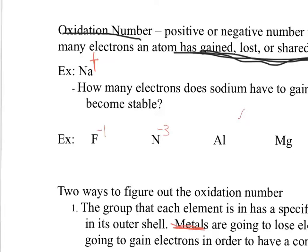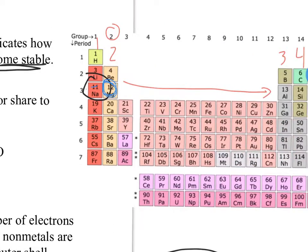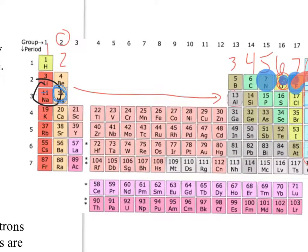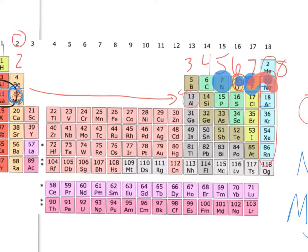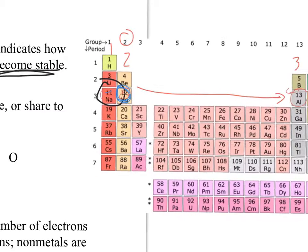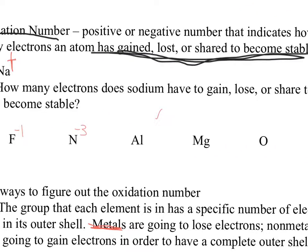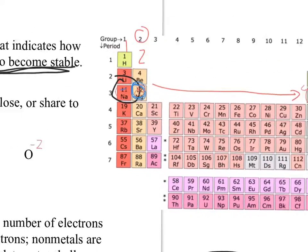Nitrogen is three spaces away from the nearest noble gas. Aluminum is a tricky one — it's five spaces away from argon to the right, but only three spaces away from neon going backwards. Since it's a metal and closer to neon, it loses three electrons, giving it a positive three oxidation number, not negative five. Magnesium, in group 2, loses two electrons to get a full outer shell, and oxygen is two spaces away from the nearest noble gas.